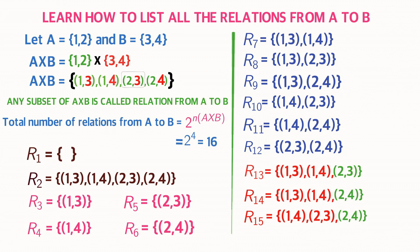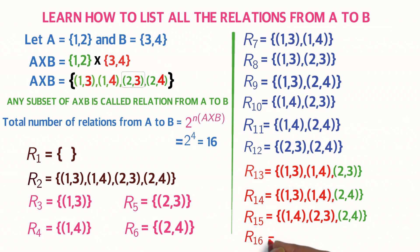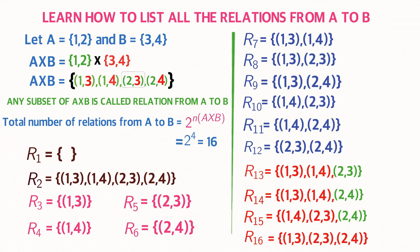Now the last relation, the sixteenth. Observe R13, R14, R15 — in these three relations we did not form a subset using the first element, third element, and fourth element together. So R16 equals the set formed with those: ordered pair (1,3), ordered pair (2,3), and ordered pair (2,4).